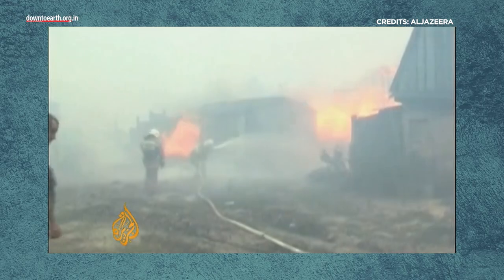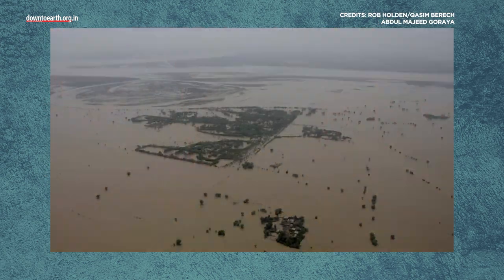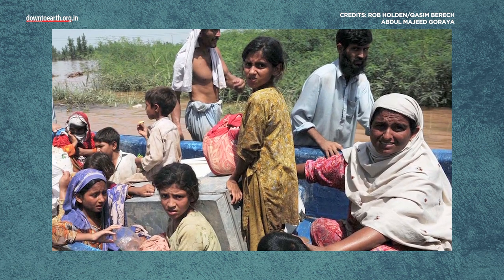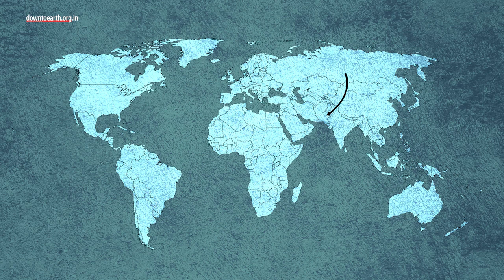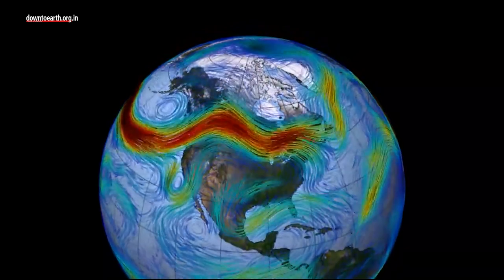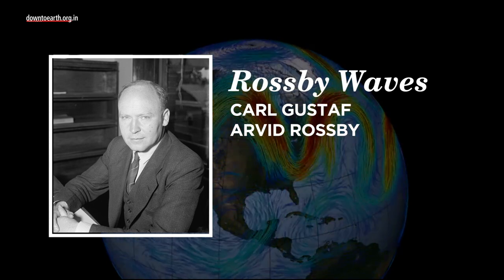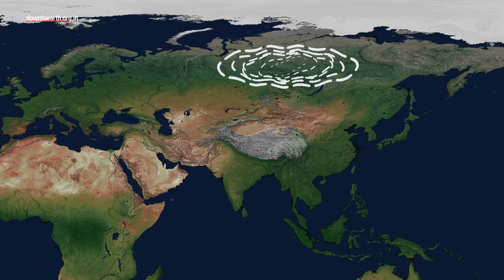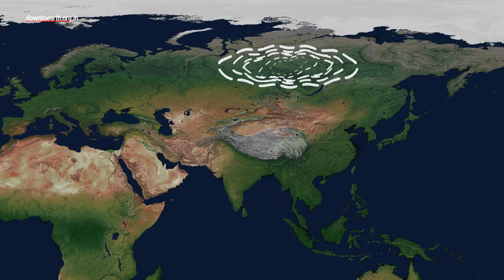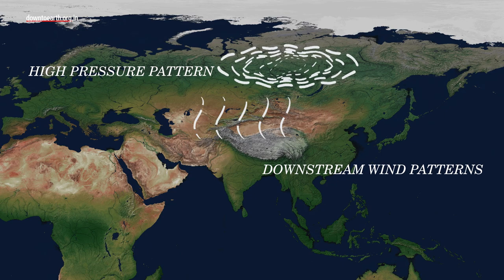Back in 2010, Russia experienced one of its most severe wildfires and heatwaves, while Pakistan witnessed its super floods, of which the 2022 flash floods are a cruel reminder. While these two events were over 2,000 km apart, they were connected to a single meteorological event — Rossby waves, named after Carl Gustav Arvid Rossby, who first identified them. The waves caused a high-pressure pattern over Russia while influencing downstream wind patterns in the Indian subcontinent, leading to the floods.